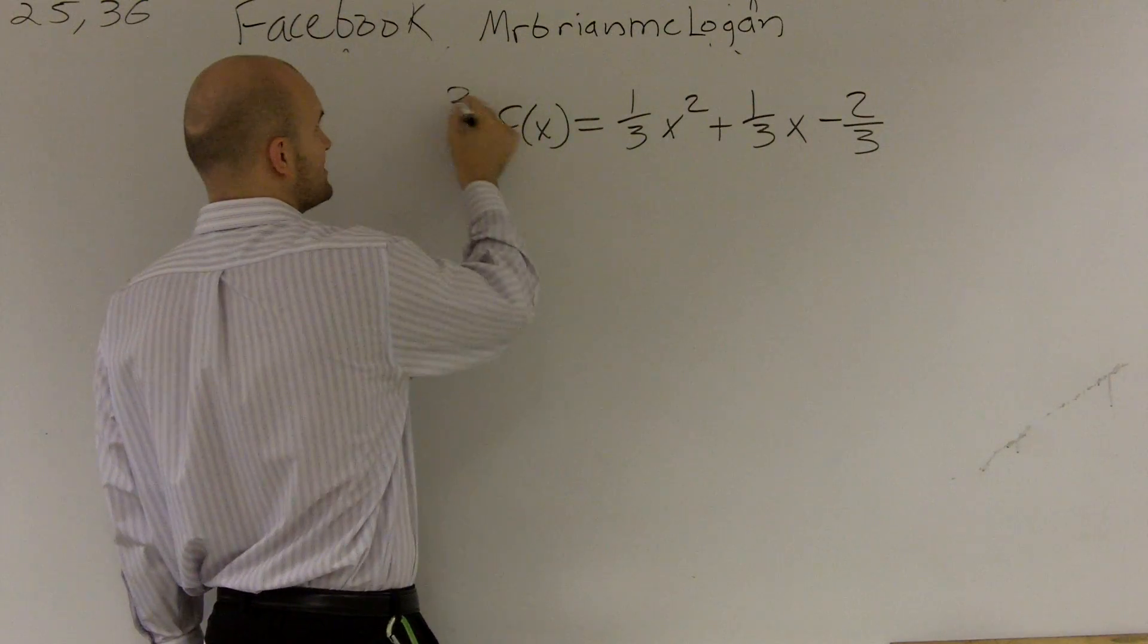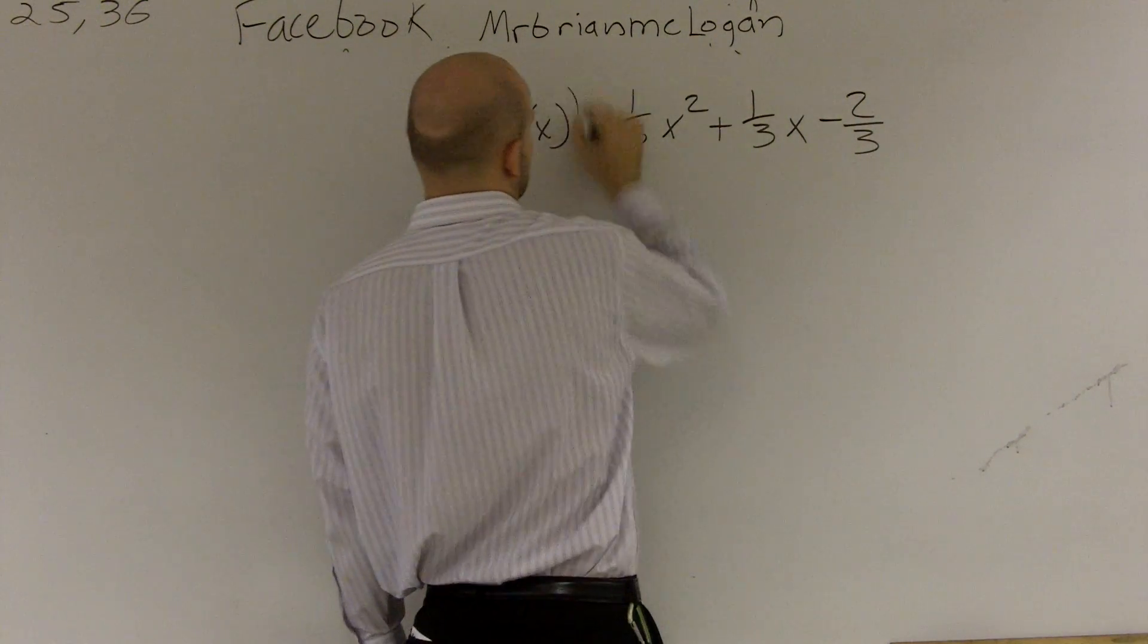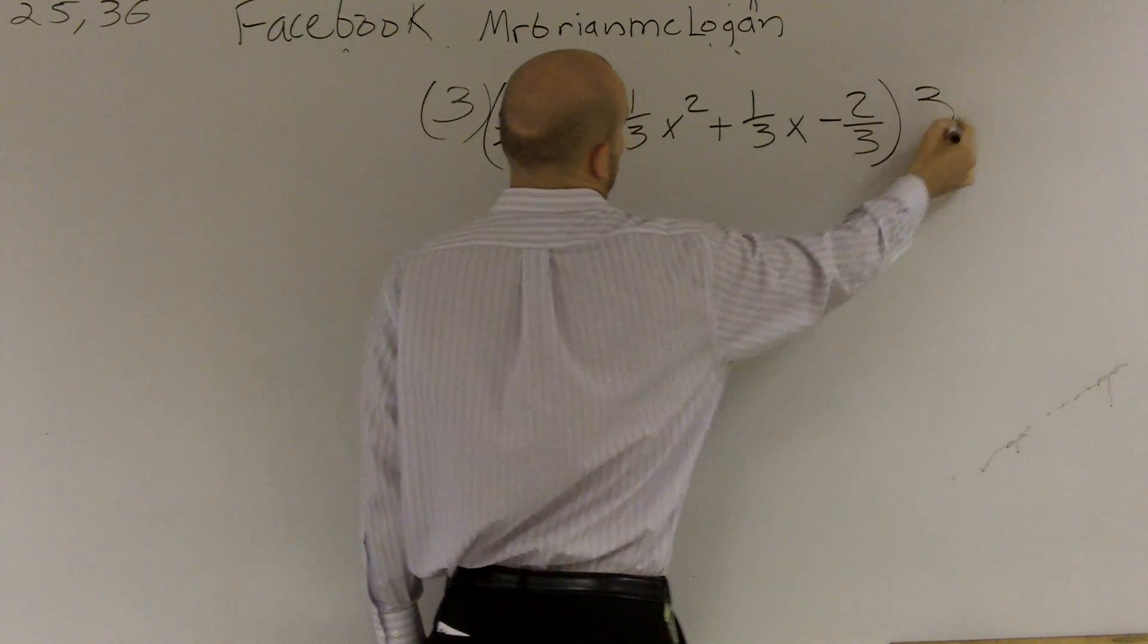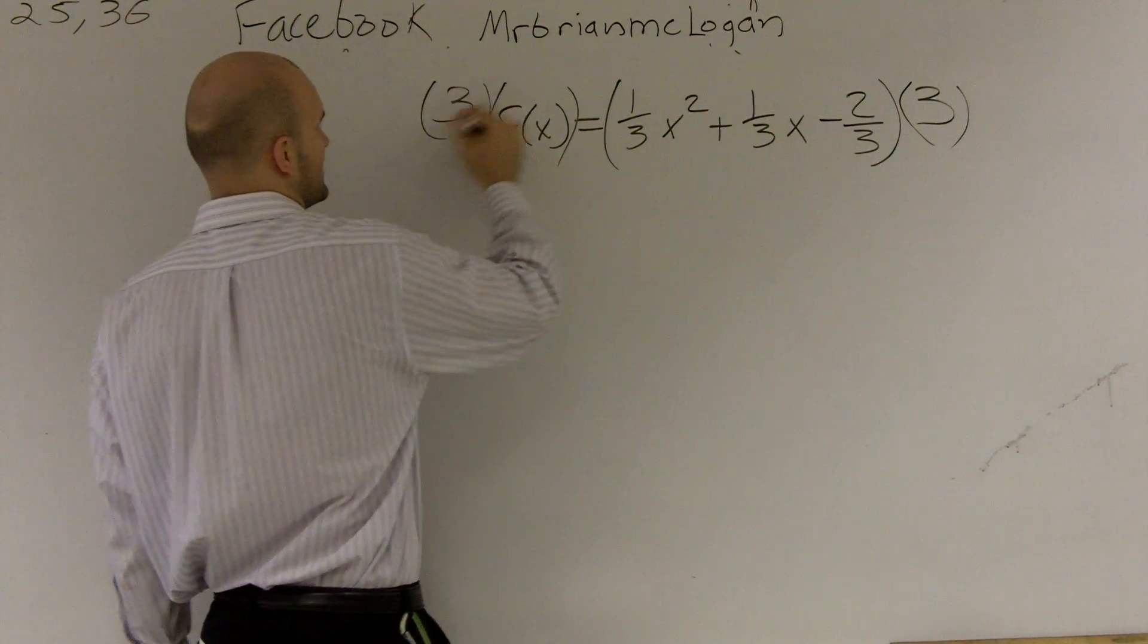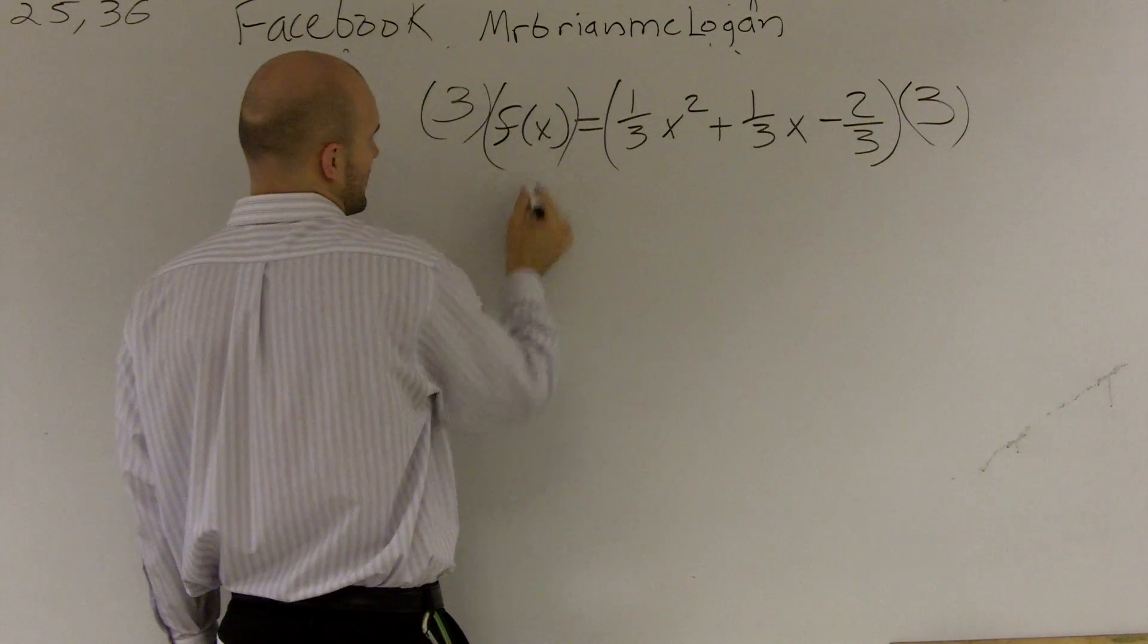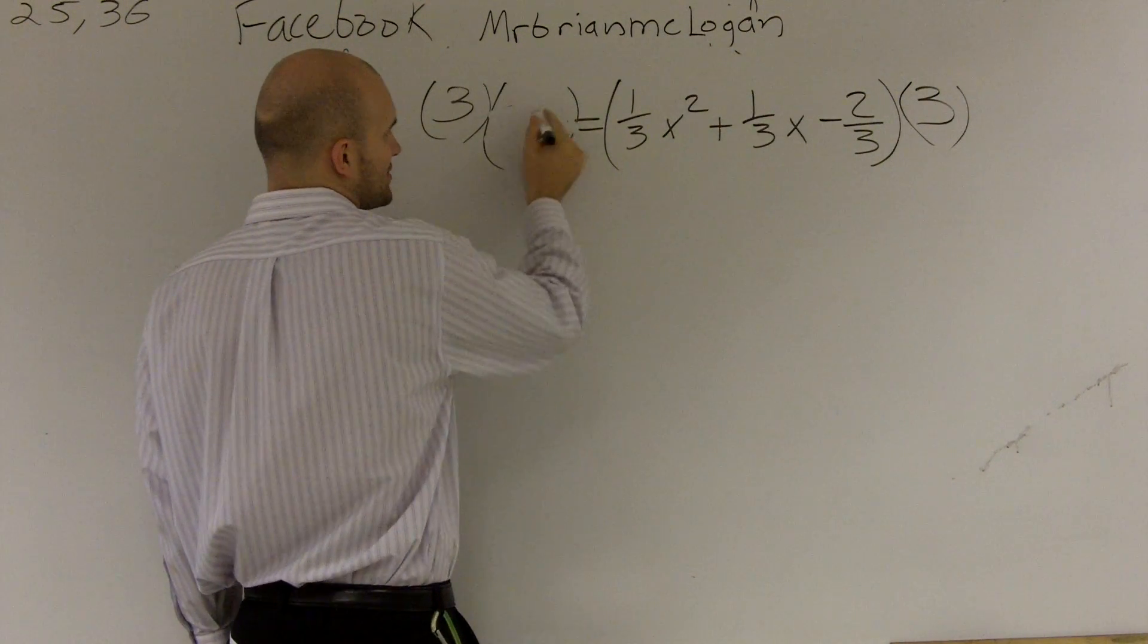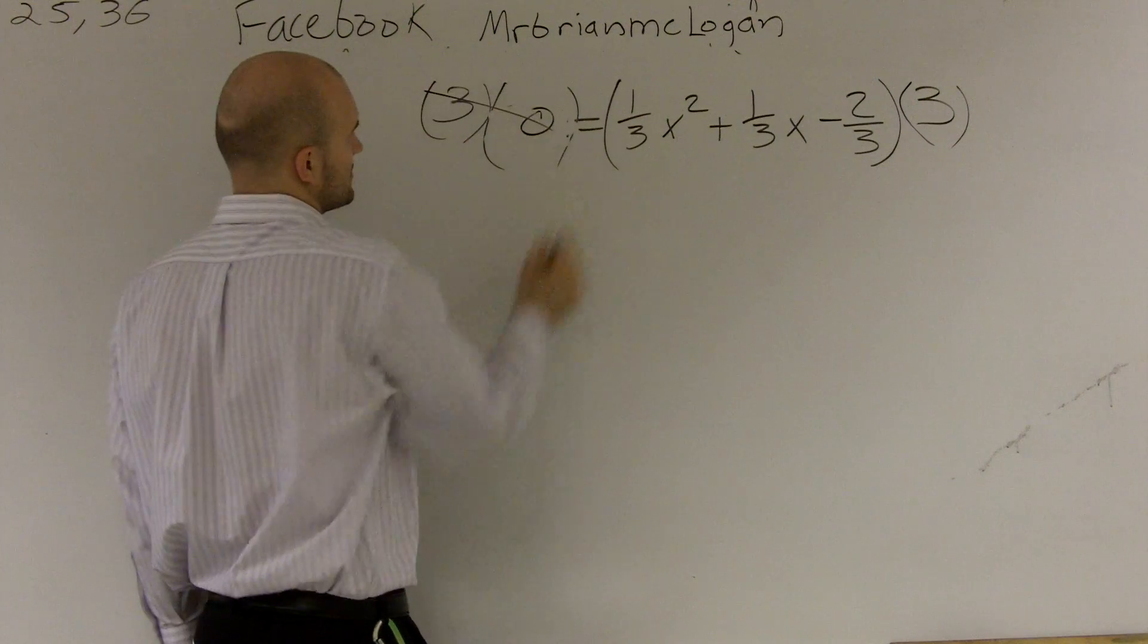So if here, whatever you do on one side, I'm going to do on the other side. So I'll multiply everything times 3. Well, guess what? Well, first of all, we need to find, we're finding the zeros, so that's going to be 0. So that goes to 0.